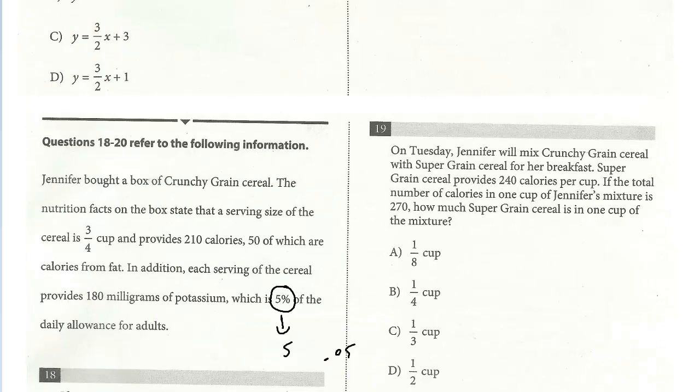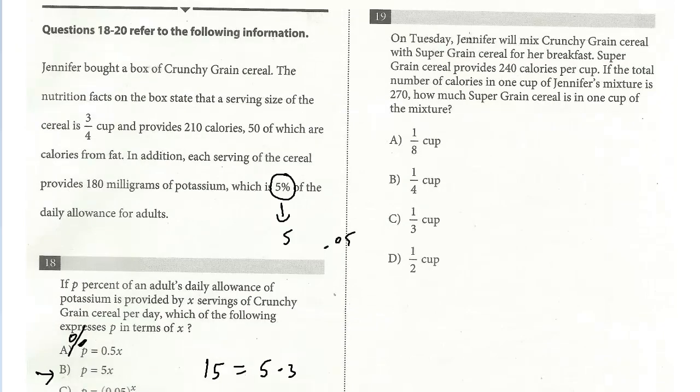All right, let's take a look at question 19. On Tuesday, Jennifer will mix crunchy grain cereal with super grain cereal for her breakfast. Super grain cereal provides 240 calories per cup. If the total number of calories in one cup of Jennifer's mixture is 270, how much super grain cereal is in one cup of the mixture?